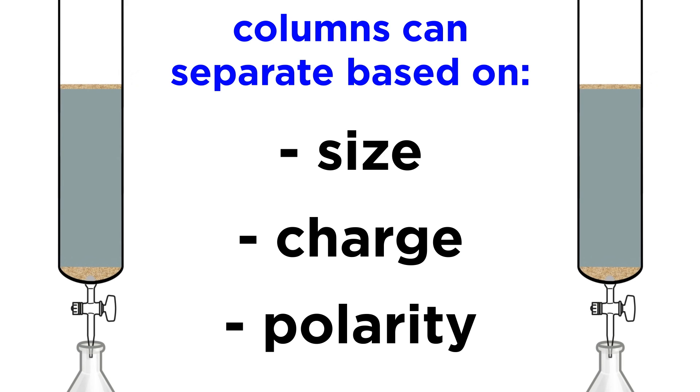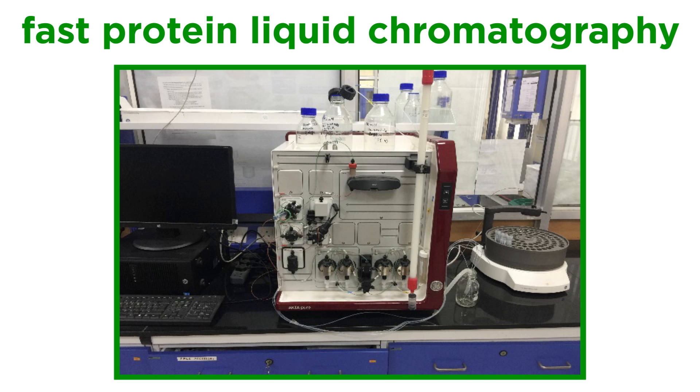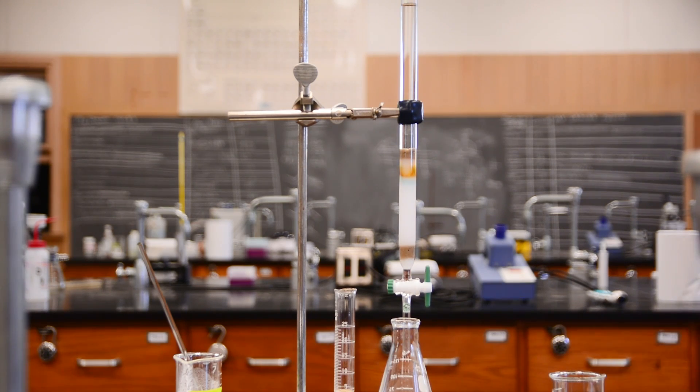In the lab we can use columns to separate things such as peptides or drugs based on aspects such as size, charge, polarity, or other affinities. The packing, mixing, and collection of these can also be automated in large-scale academic and industrial processes. A sophisticated example of column chromatography is FPLC, or fast protein liquid chromatography, a technique that is used to separate proteins. But for now that concludes an introduction to column chromatography.